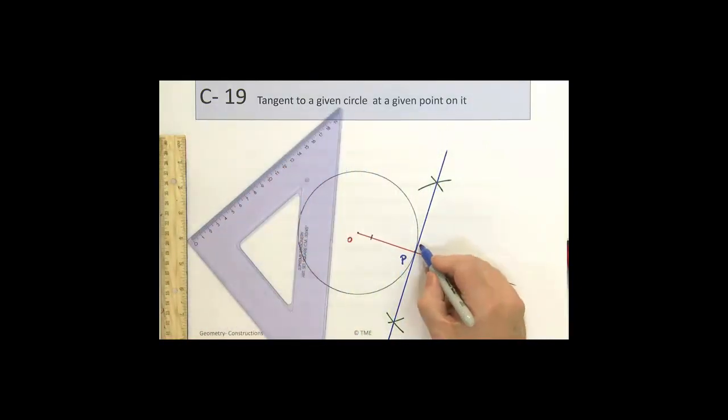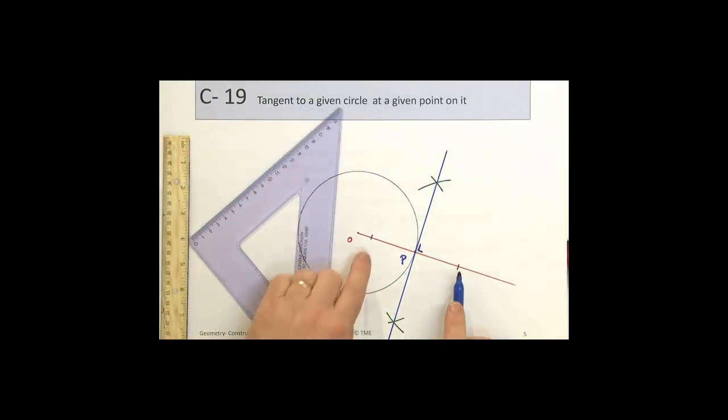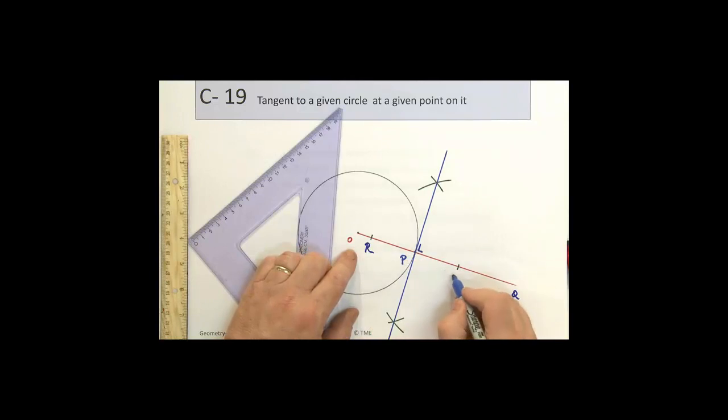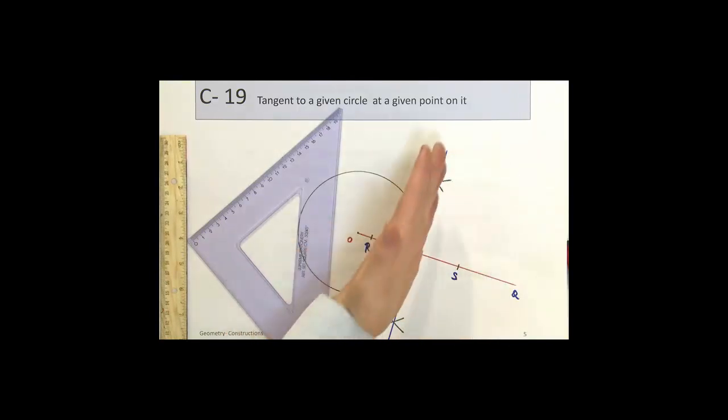that is perpendicular by definition, because on this line OP, or OPQ if we wish to call it that, we have bisected the distance here between these two notches, R and S maybe, at the point P perpendicularly.